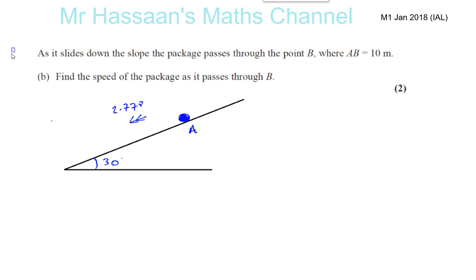Okay, question number four from January 2018 M1 Mechanics 1 IAL paper. We've done 4a already. Now for 4b, we found that the acceleration in part a was 2.778, unrounded value or rounded to a high degree of accuracy. It says as it slides down the slope, the package passes through the point B where AB is equal to 10.